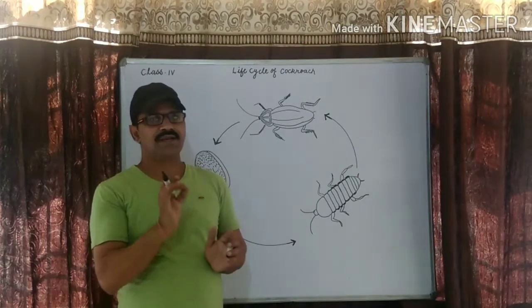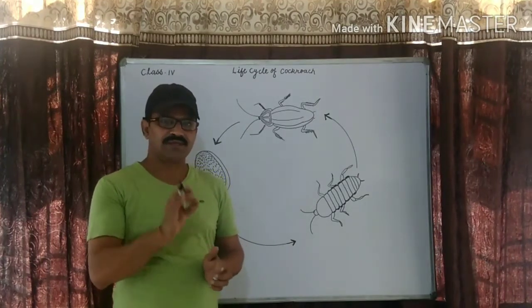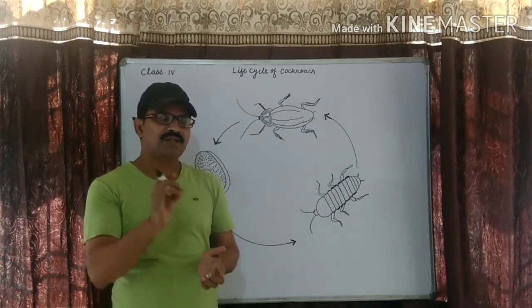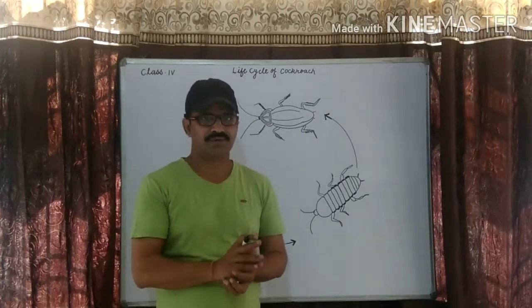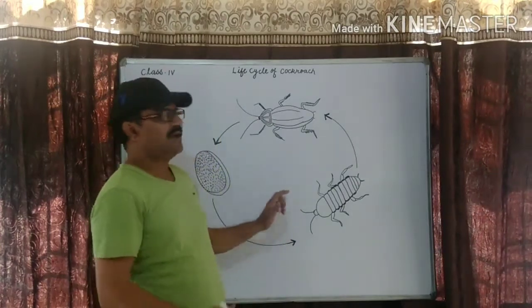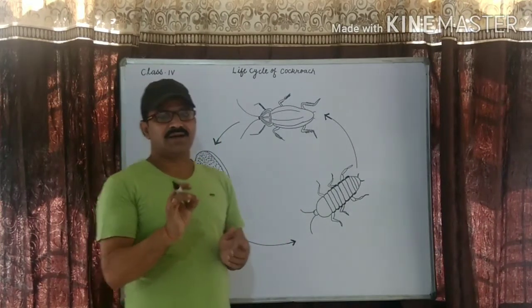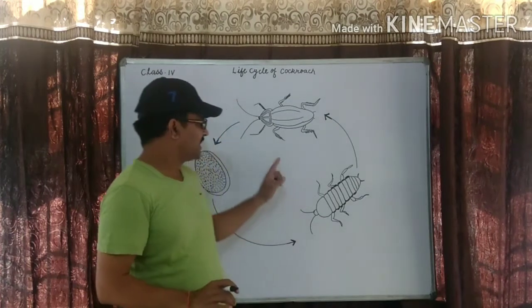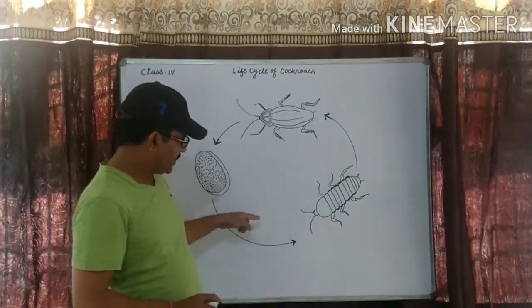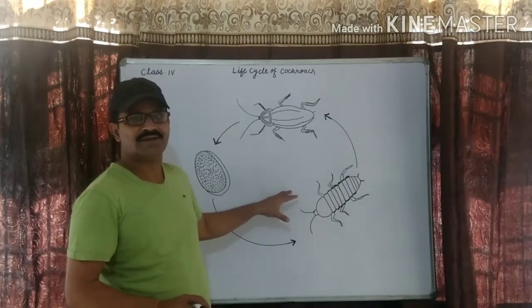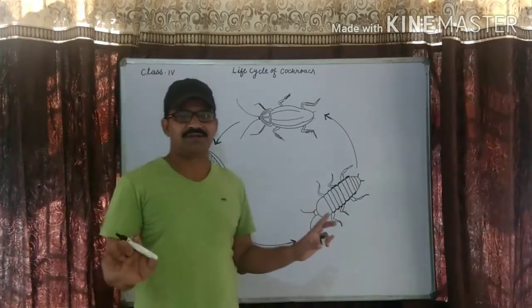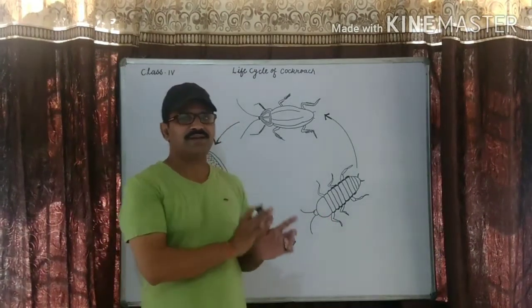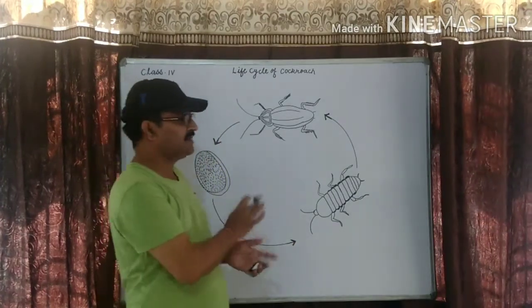All insects lay eggs. Some insects have 3 stages in their life cycle, while some others have 4. Most adult insects do not look after their young ones — they do not care for their babies.